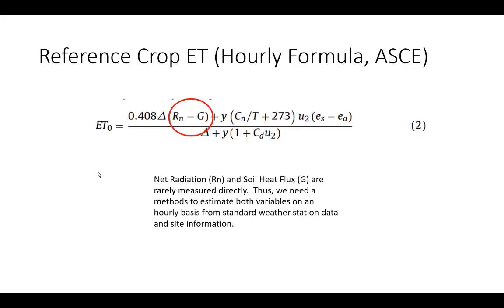In our ASCE reference crop evapotranspiration formula, we see there in the numerator, there's a term RN minus G, that's net radiation minus soil heat flux. That's the total available energy that's either going to be used for latent heat flux, evaporation, or sensible heat flux, and we'll talk about that some more in the next sections. These are really large terms in this formula, so if you make any kind of mistake on calculating net radiation and soil heat flux, that'll show up very quickly in your calculations.